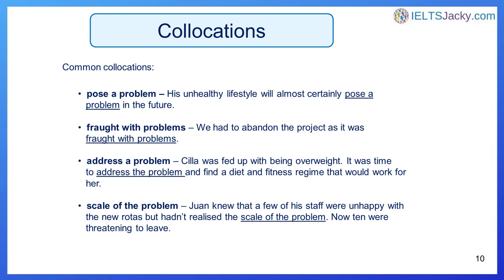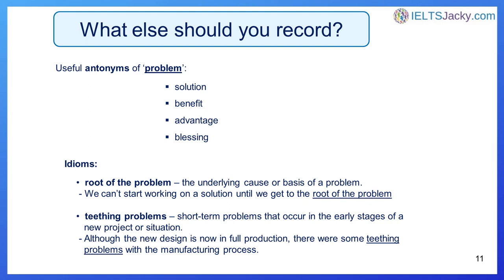This way of recording vocabulary is just a suggestion — find the way that works best for you. Two other things you'll probably want to record depending on the word are antonyms and idioms. Just to remind you: synonyms are words that mean exactly or nearly the same as a given word, while antonyms are words that mean the opposite. Idioms are phrases or word combinations similar to collocations, but it's usually impossible to understand what they mean from the combination of words themselves. Most idioms are used informally, so they're fine to use in your speaking test, but they have no place in the writing test, which requires more formal language. With an idiom you must be 100% certain of how and when to use it before using it in the IELTS exam. If you use it incorrectly, you'll probably sound ridiculous.